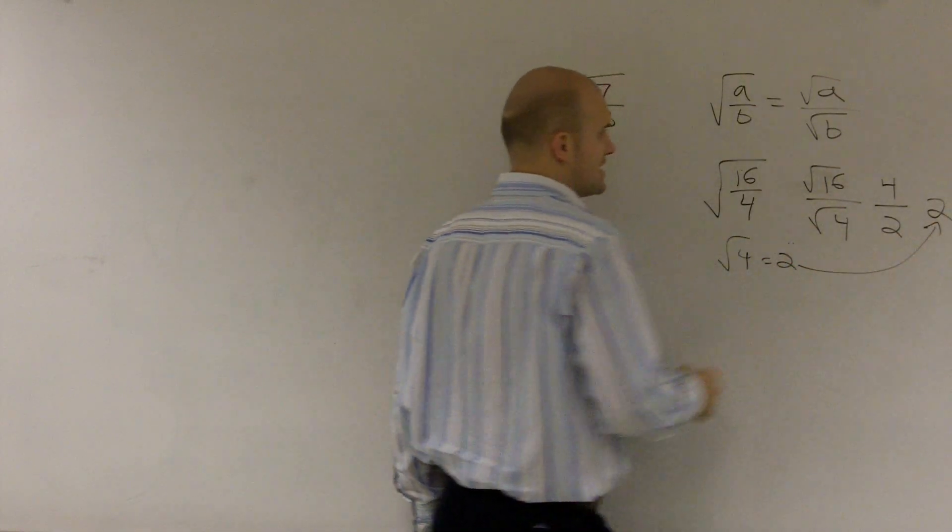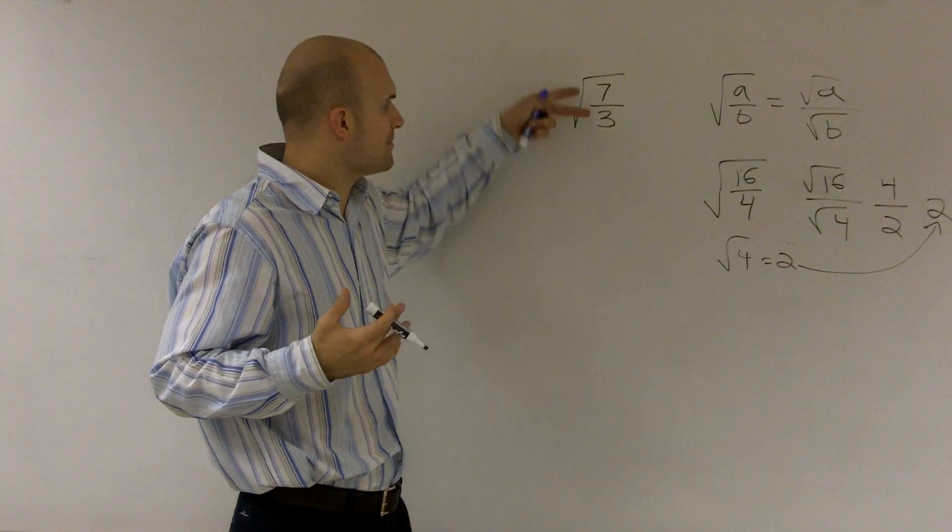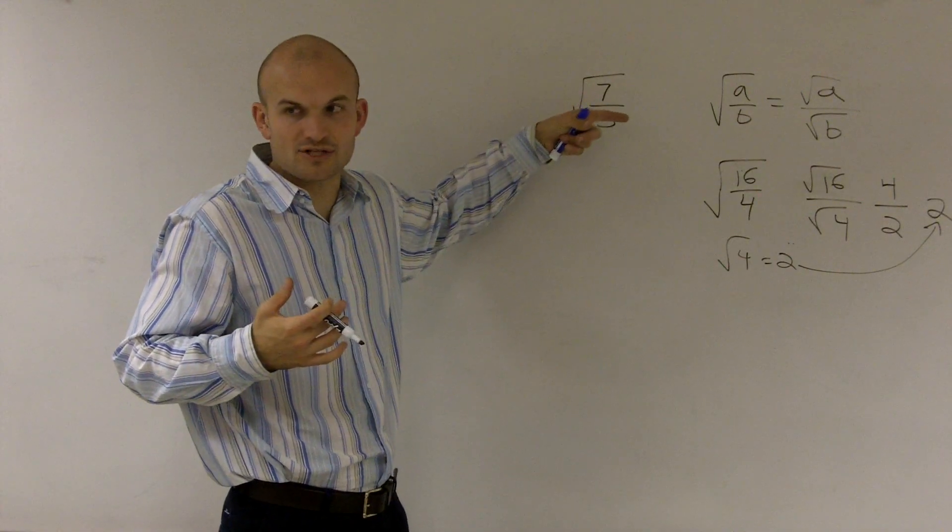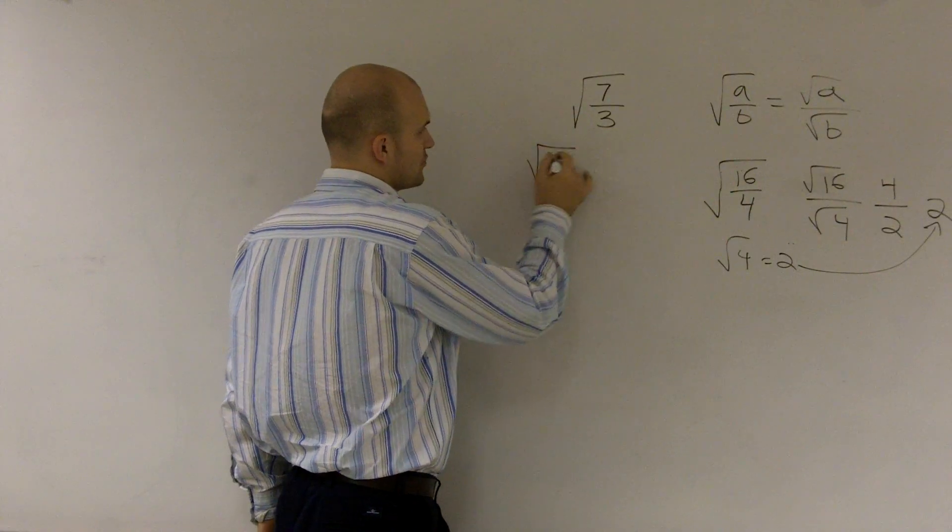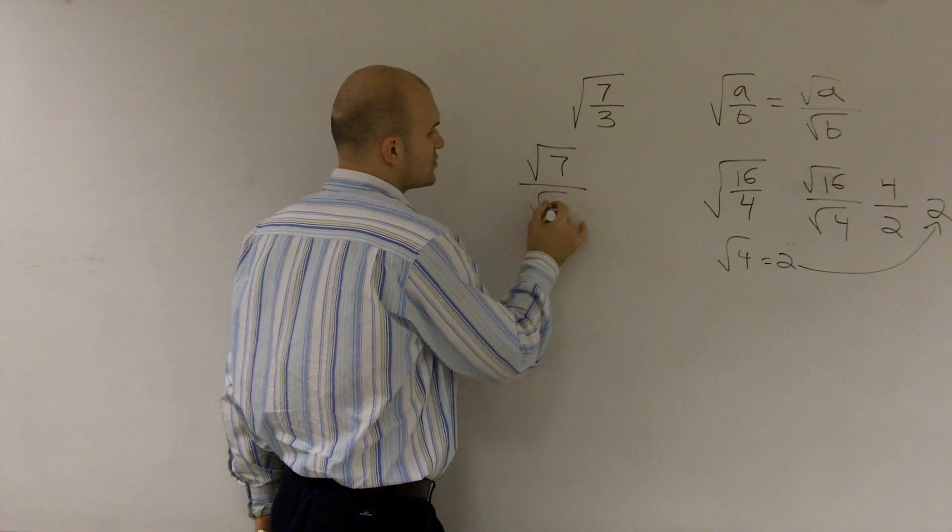So either way, you're going to get the same answer. However, when you have a problem that you can't divide it inside the function, we can separate it. So what I'm going to do is I'm going to separate this as the square root of 7 over the square root of 3.